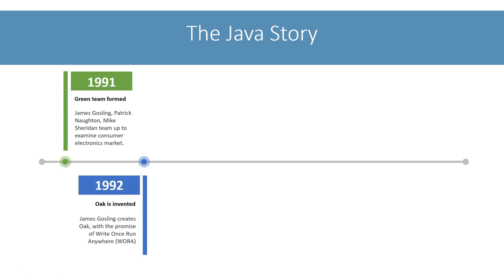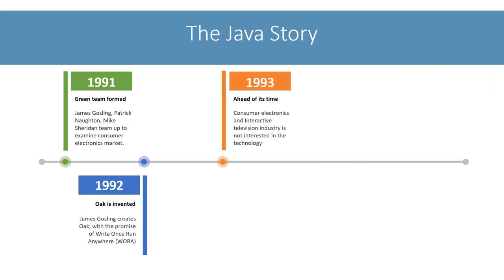Java aimed to address this pain point and promised a write-once-run-anywhere solution. Software written in Java is platform-independent and can be run on any device without any additional work. Despite all this, it didn't get much love from the consumer electronics space. Throughout 1993, the team tried very hard but couldn't find any customers. It was probably too advanced and ahead of its time for the consumer electronics and interactive television industry.